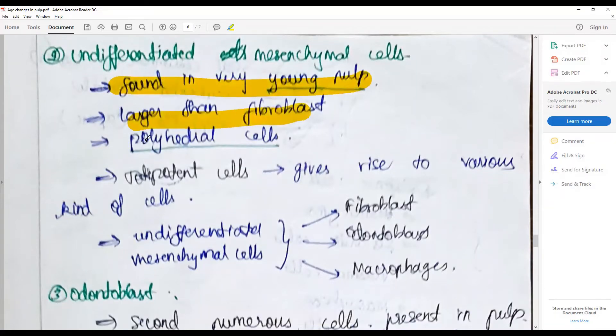They have totipotent ability, meaning they can give rise to various kinds of cells. Undifferentiated mesenchymal cells can differentiate into fibroblasts, odontoblasts, or macrophages, to that fact any kind of cells.